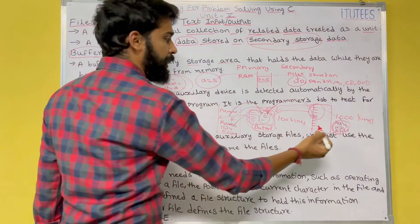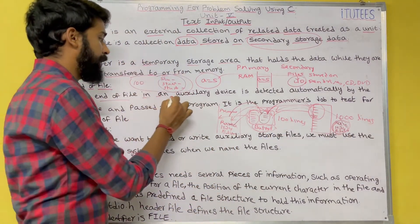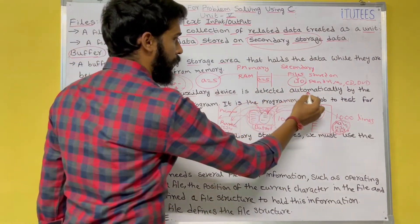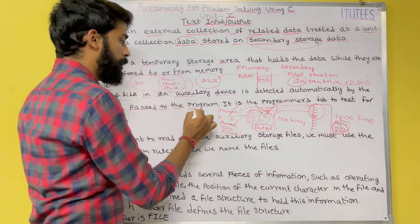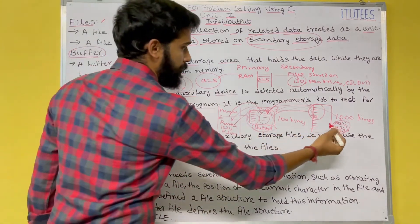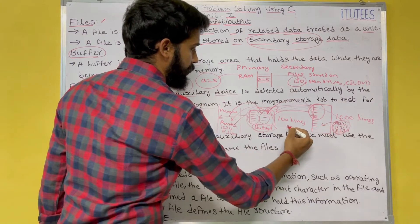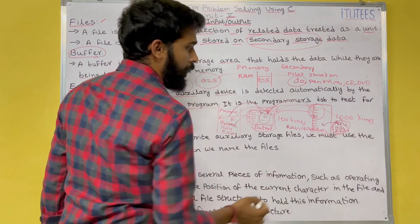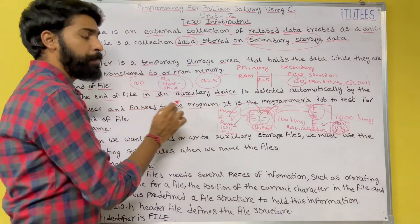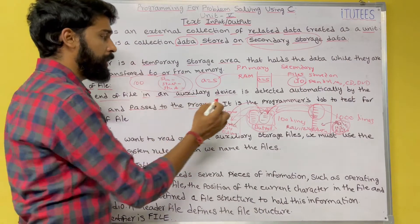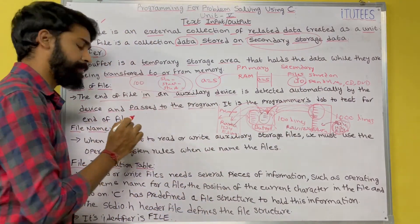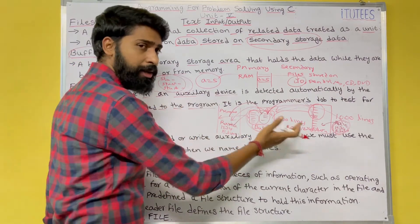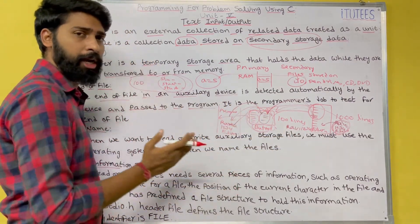The operating system automatically identifies the end of the file. The file is stored on the auxiliary device — that means the hard disk — and the end of file is detected automatically by the device and passed to the program. For example, it retrieves data: a, b, 1, 2, 3, 4 — after that there is no more data, so the device identifies that and passes to the program that we have reached the end of the file. It is the programmer's job to test for end of file.